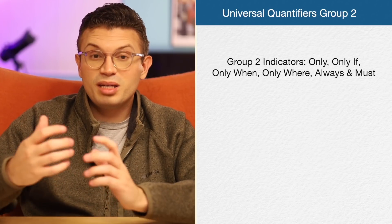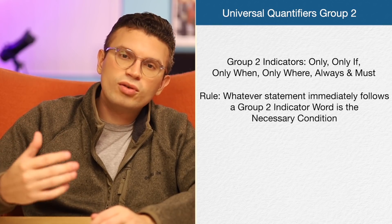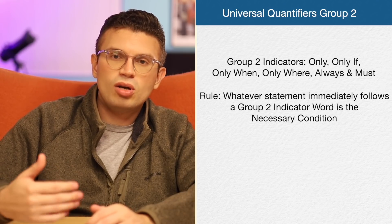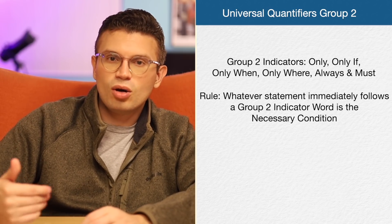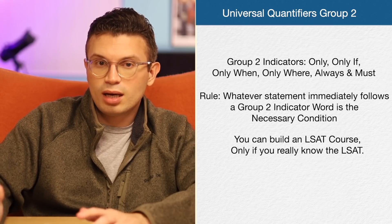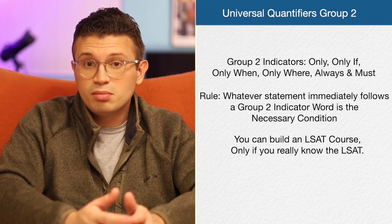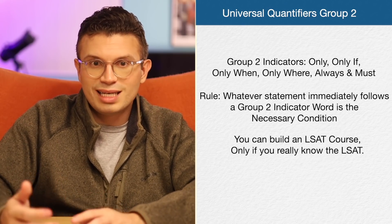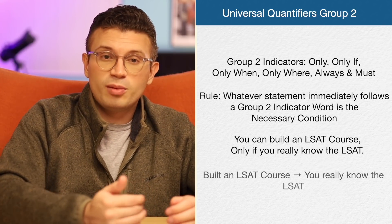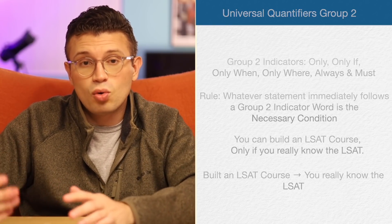Next, we have group two. Group two words follow this rule: whatever statement immediately follows a group two indicator word is the necessary condition. These words are: only, only if, only when, only where, always, and must. For example: 'You can build an LSAT course only if you really know the LSAT.' The logical indicator word is 'only if,' so 'you really know the LSAT' is the necessary condition. Our other statement — building an LSAT course — must therefore be the sufficient condition. So we diagram it: if you built an LSAT course, then you really know the LSAT.